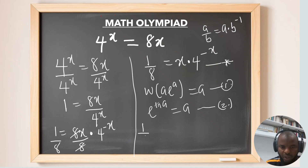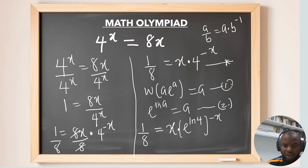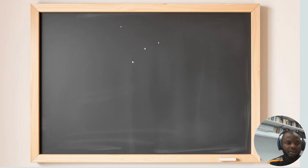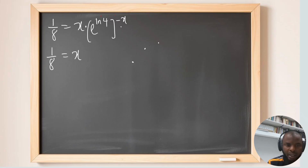Rewriting our equation: on the left-hand side we have 1 over 8, and on the right-hand side we have x multiplied by e to the power of negative x times the natural log of 4. The exponential and natural log cancel to give back 4^(-x), confirming the rewrite. This can also be written as x times e to the power of negative x · ln(4).